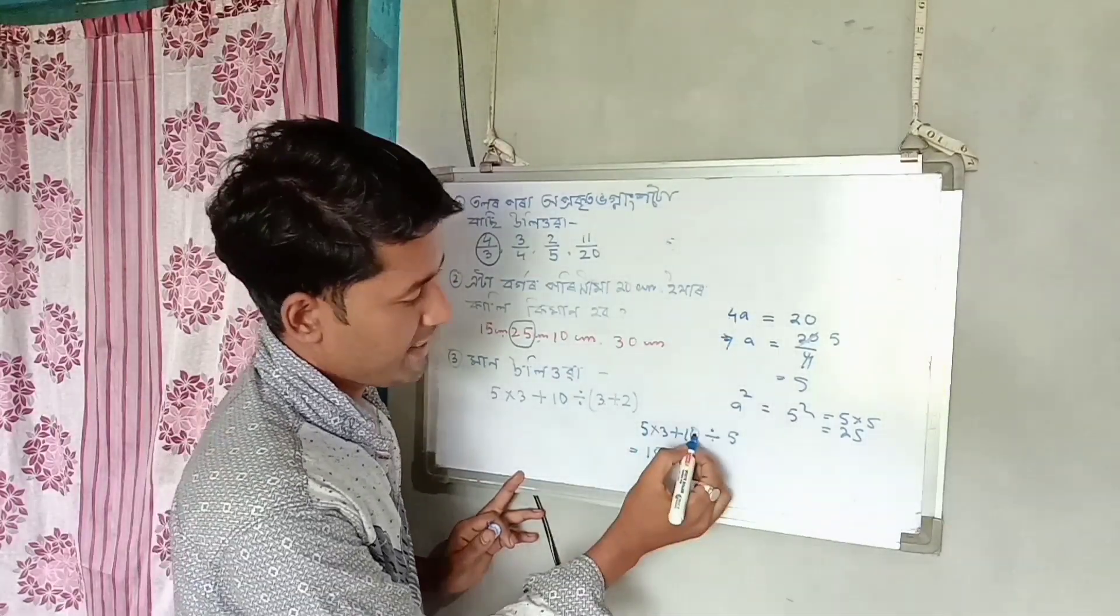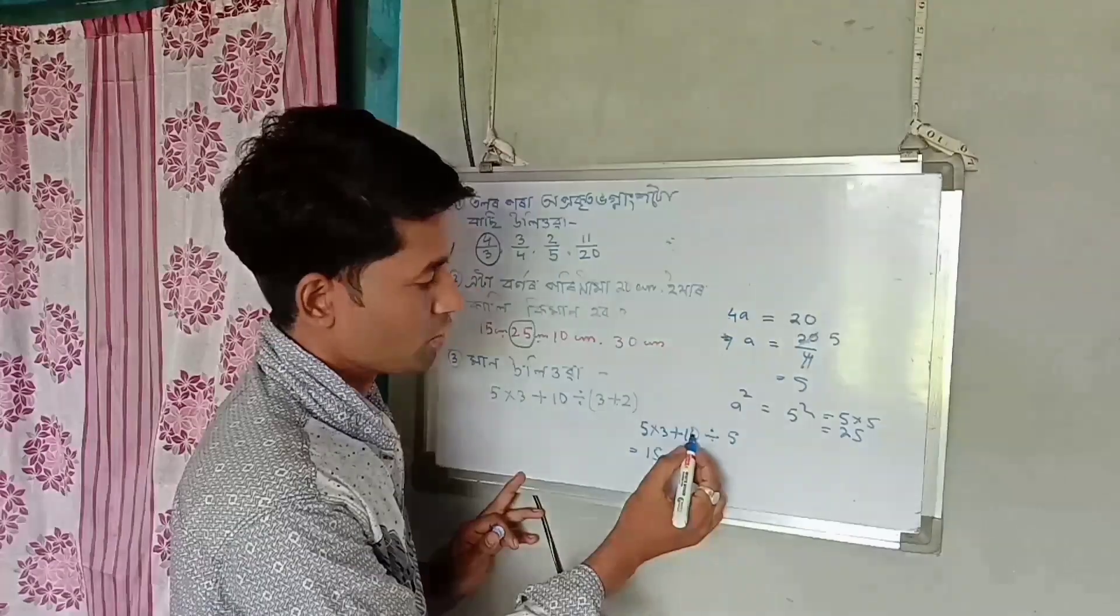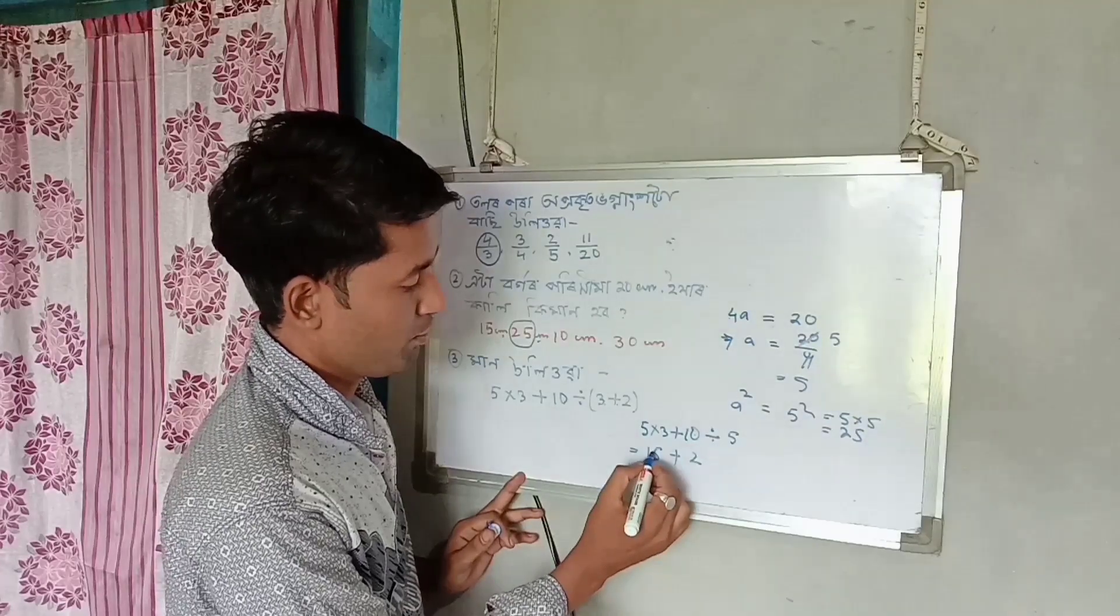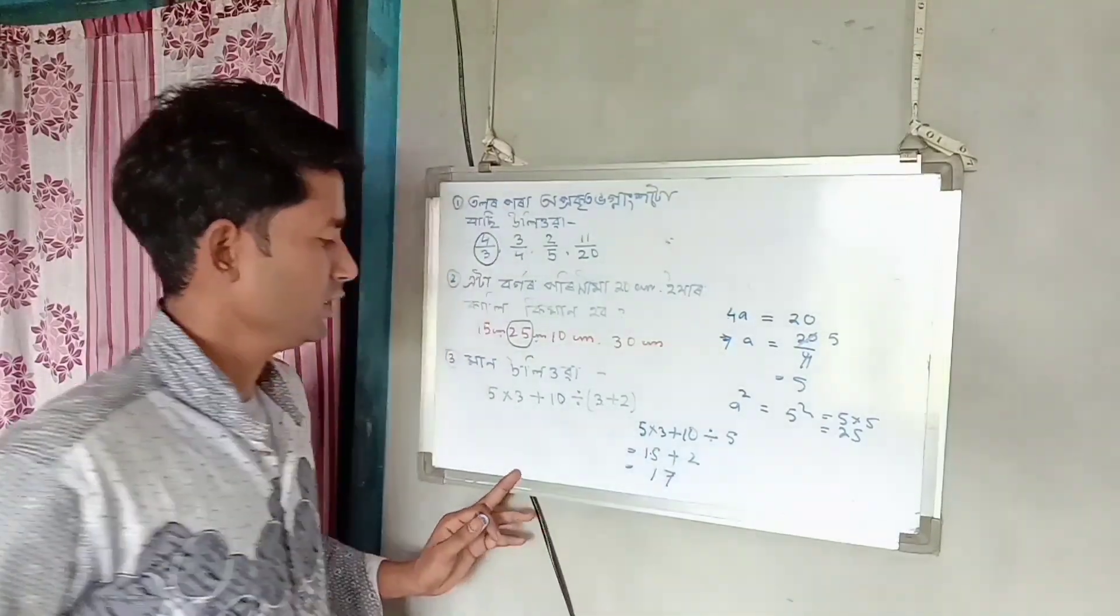Plus 10 divide 5, which means 10 divided by 5 equals 2. So we have 15 plus 2, which equals 17. That's the answer.